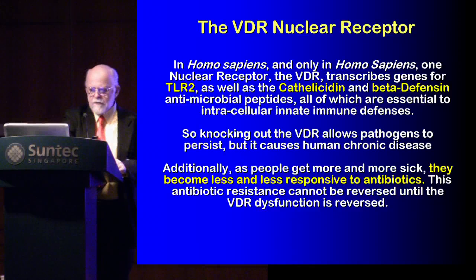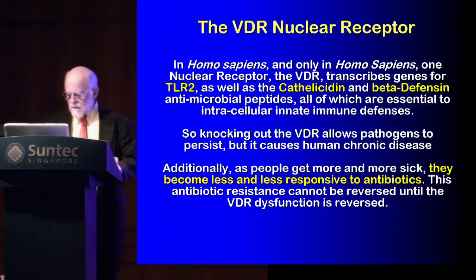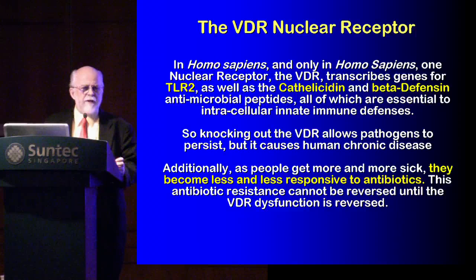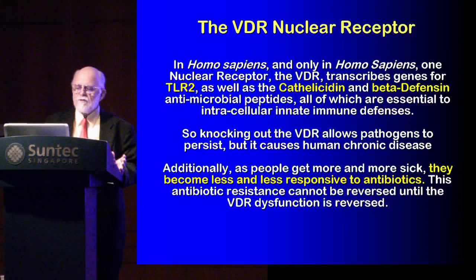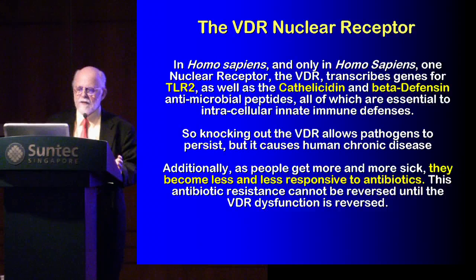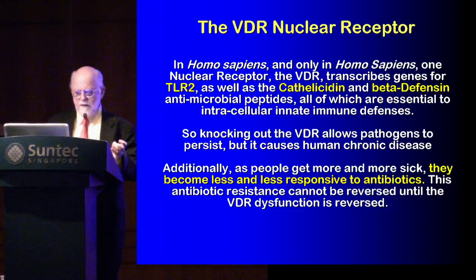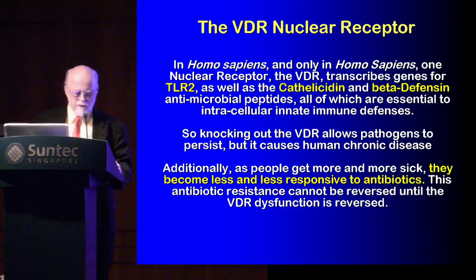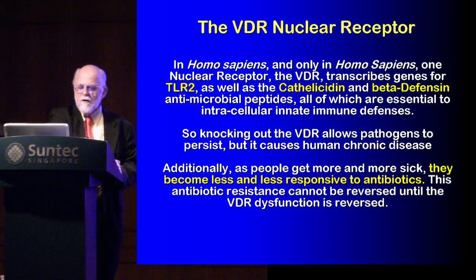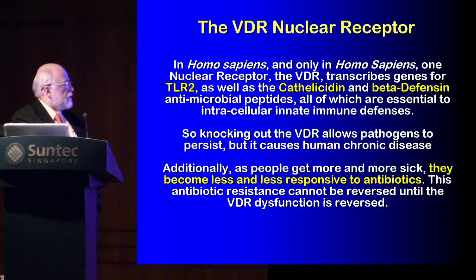What we found some years ago is that the key to persistent pathogen survival in Homo sapiens is the VDR nuclear receptor. Because in Homo sapiens — and only in Homo sapiens, not even in some of the higher primates — there is one nuclear receptor, the VDR, which transcribes genes for TLR2, cathelicidin, and to a lesser degree beta-defensin and other antimicrobial peptides. All of these are essential to intracellular innate immune defenses. If innate immunity fails, the cytokine cascade flows on to the adaptive immune system, generating antibodies randomly. Knocking out the VDR allows pathogens to persist but causes human chronic disease.